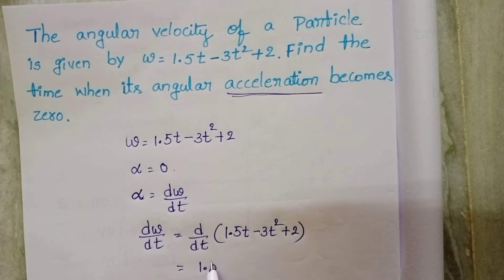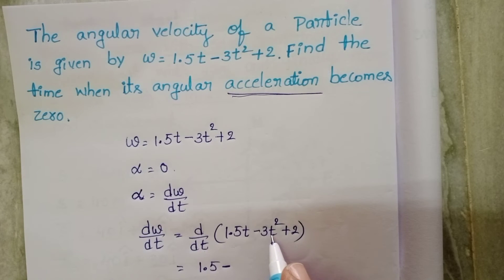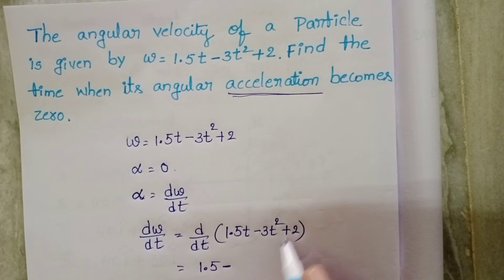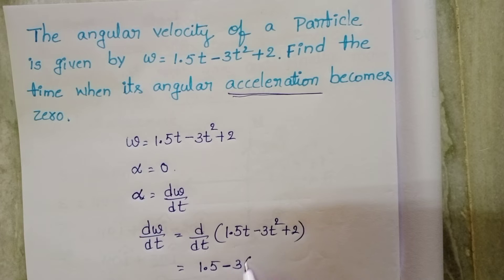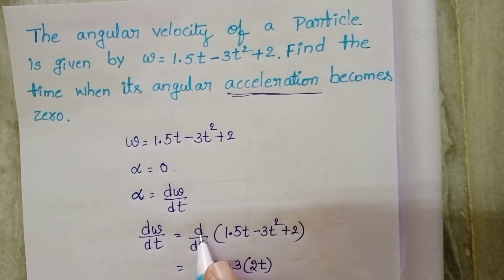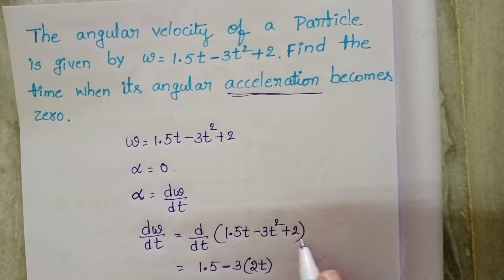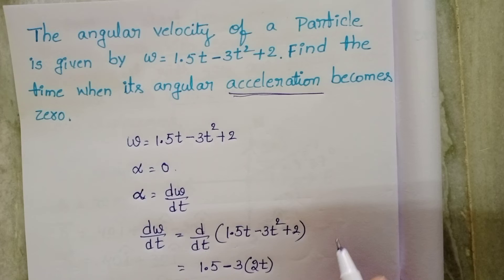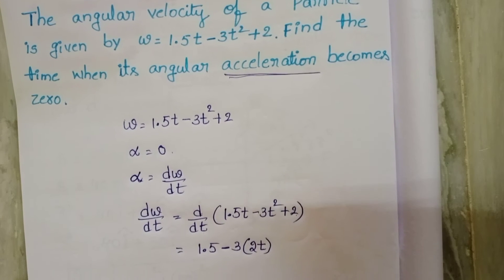So 1.5 minus d by dt of t squared becomes 2t. That gives 2 times t, and the differentiation of a constant is 0.